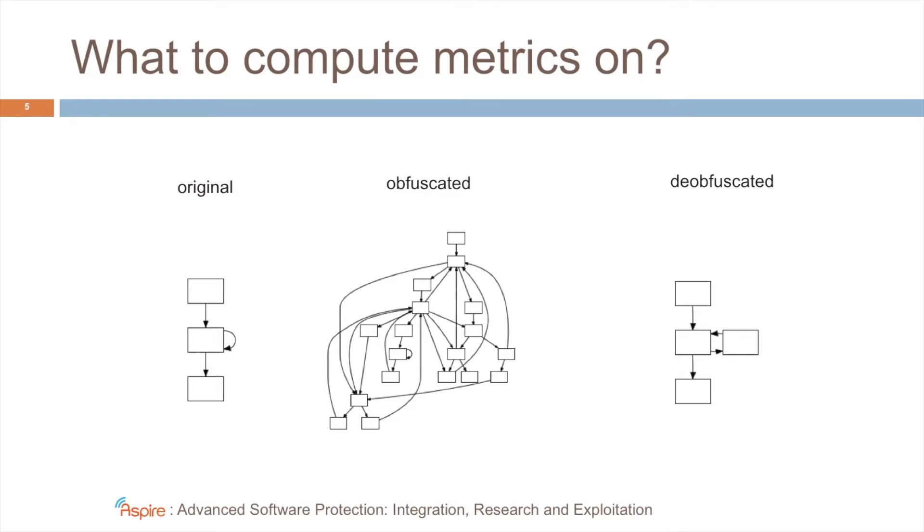Well, in our approach, we will not be using a single of these representations. We will use all of them. Because if an attacker has not deobfuscated the code yet, he will see this middle representation. After he has performed a deobfuscation, he might be seeing this form. So for every place in a Petri Net, when an attacker has reached a sub-goal, he will have a different view on the program. And to compute the metrics, we will just try to estimate that view.